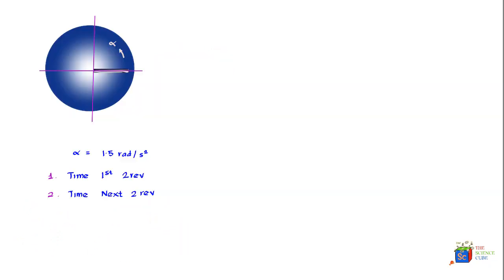What we have in this problem is a merry-go-round moving with an angular acceleration of 1.5 radians per second squared. Its initial angular velocity is zero, and it starts at a position where the angular position is zero radians. The question is: what is the time taken to do the first two revolutions?